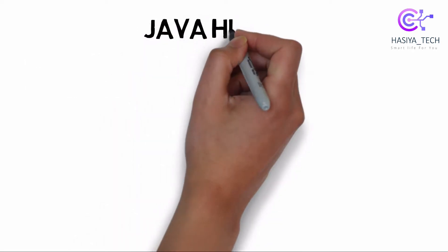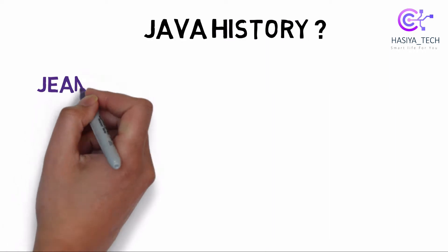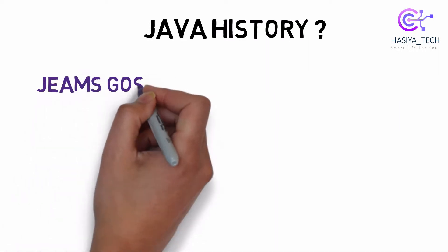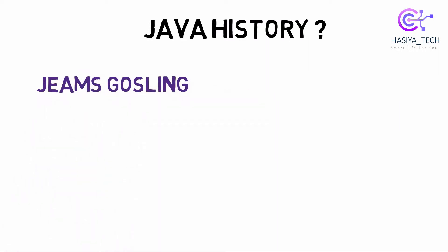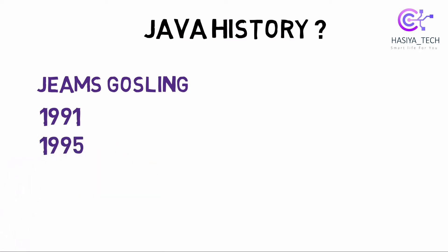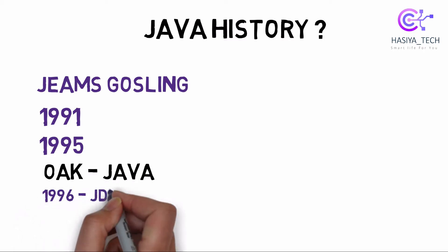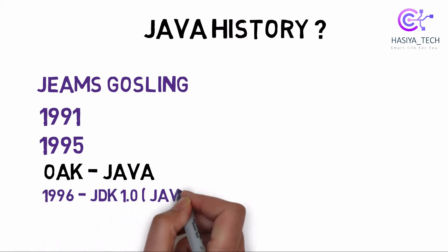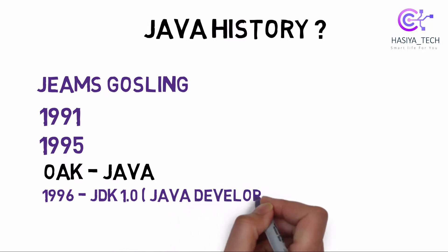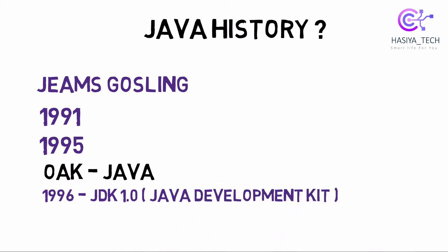Java history: it was created by James Gosling. The first version of the language in Java was also called OAK. It is possible that you can use the language in Java.